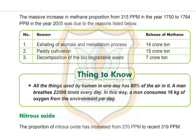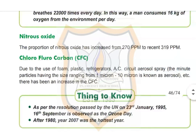Things to know: all the things used by humans in one day have 80 percent air in them. A man breathes 22,000 times every day, and in this way a man consumes 16 kg of oxygen from the environment per day. Now, about nitrous oxide — the proportion of nitrous oxide has increased from 270 ppm to a recent 319 ppm.